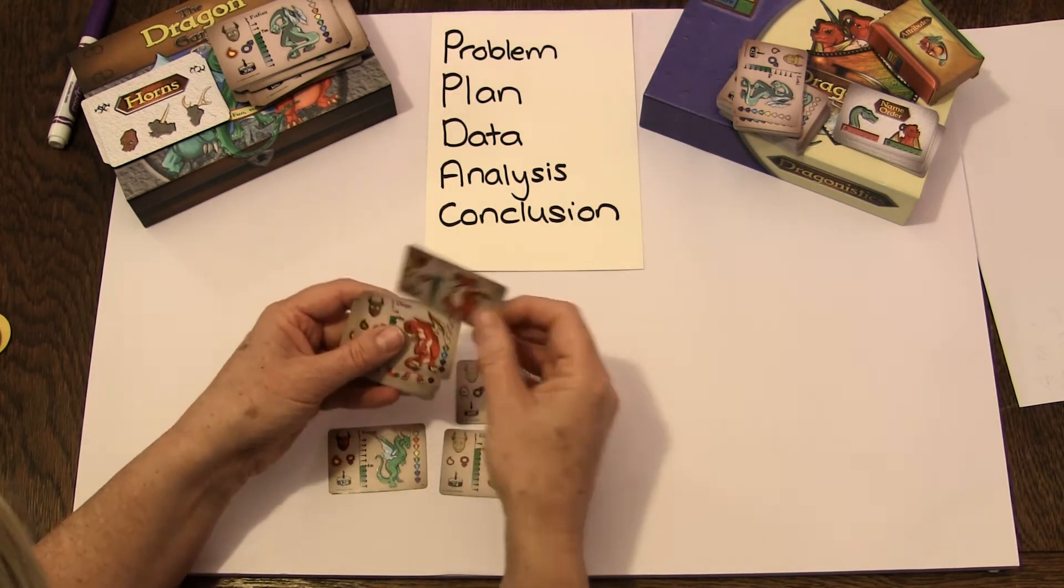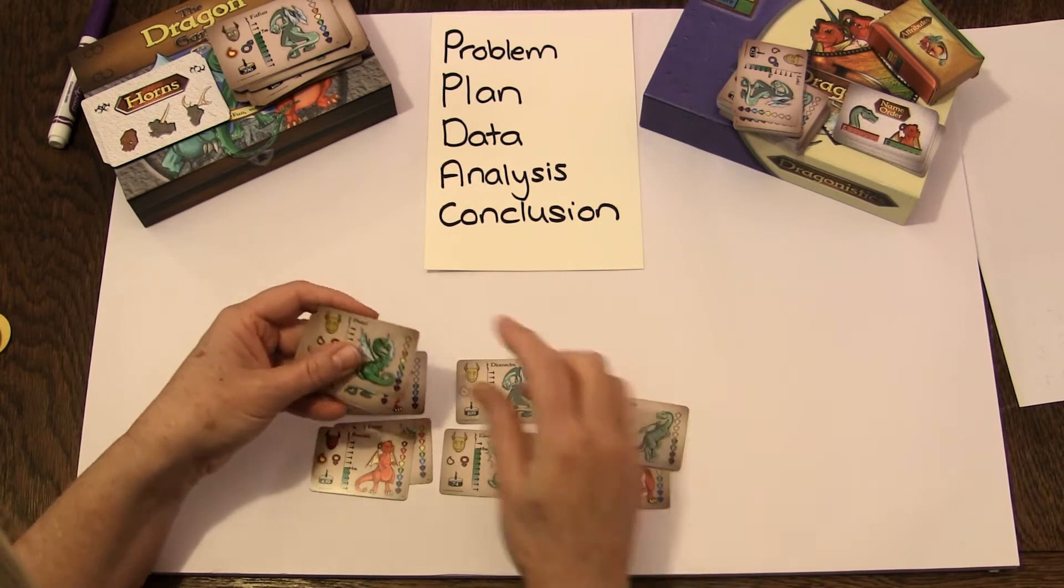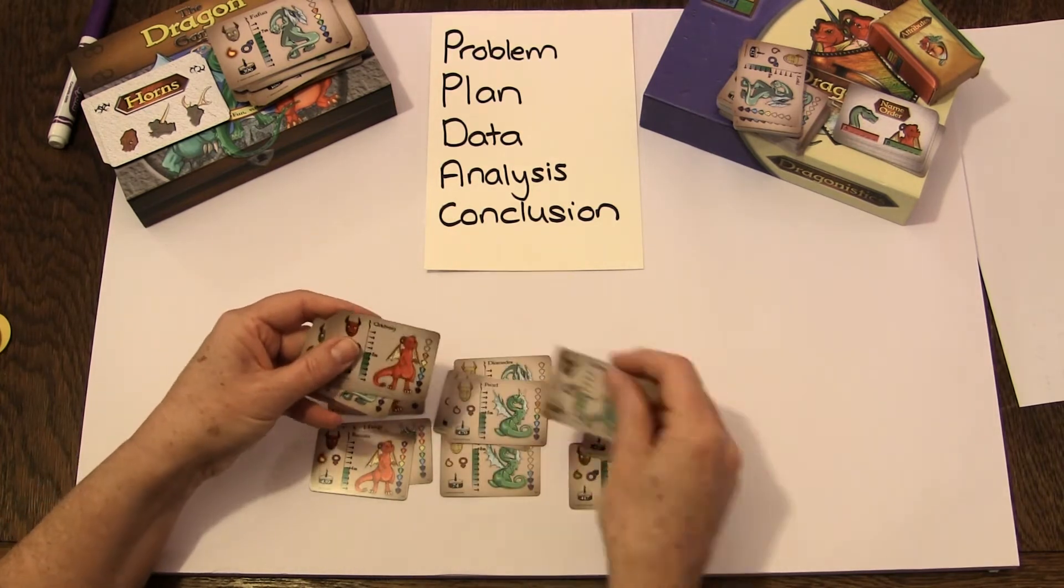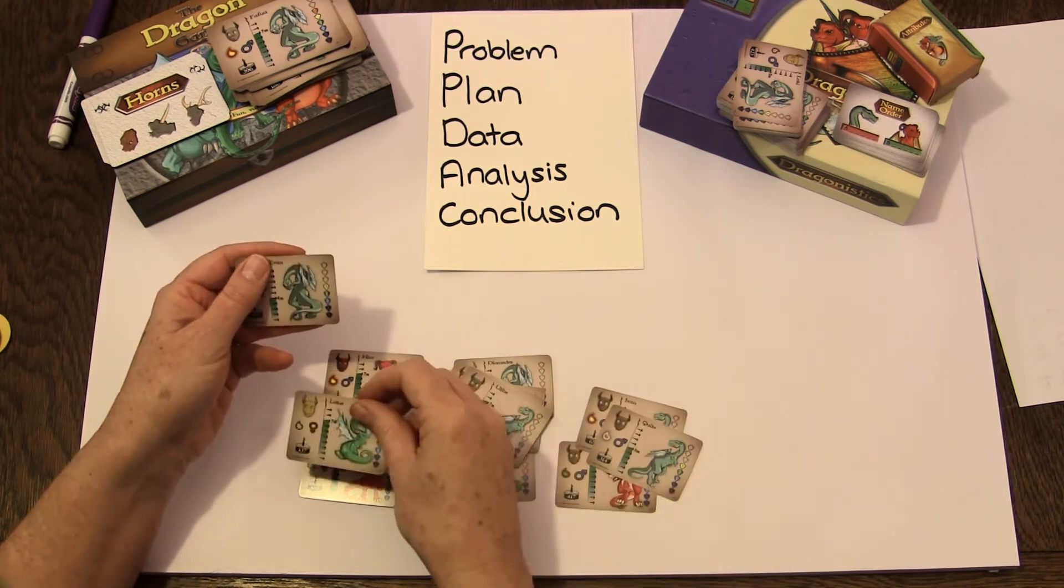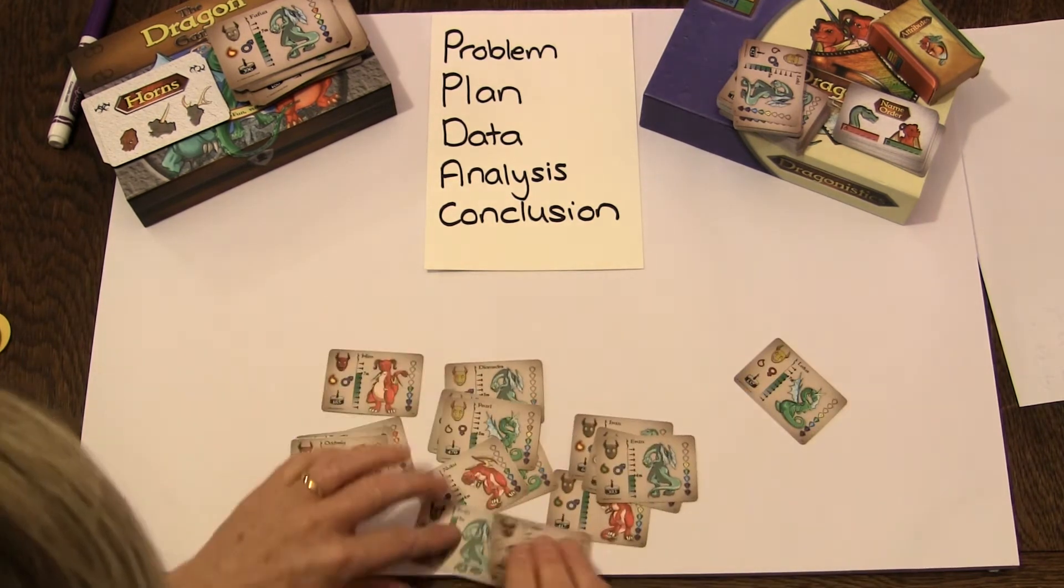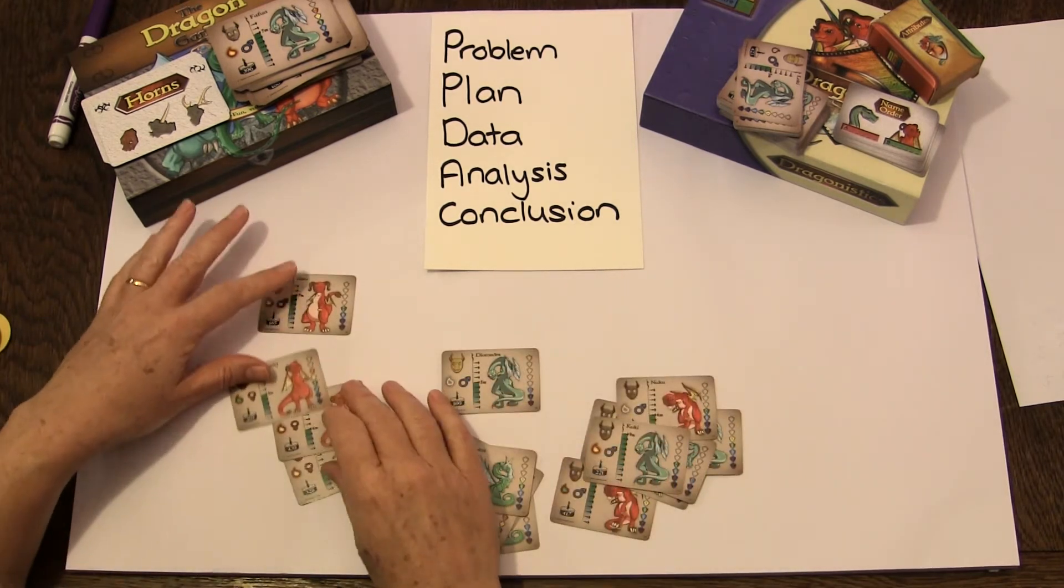So at the analysis stage we're sorting according to what these little faces are. Oops. I hope I could do this properly. Right, so then we're going to count.